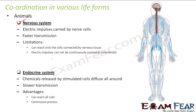But there are certain limitations of the nervous system. The first limitation is that it can reach only the cells which are connected by nervous tissue, because electric impulses are related only to nerve cells — they cannot reach all cells of the body. That means all cells of the body cannot receive the information. The second limitation is that electric impulses cannot be continuously created and transmitted. Only nerve cells have specialized detectors to detect electrical impulses; other cells do not have those detectors.